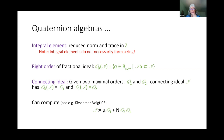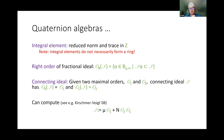The Bible for quaternion algebras is a book by Marie-France Vignéras from the eighties, written in French and very well written and complete. More recently, people have written English references — John Voigt has a book with a lot of that material and many algorithms. There are also lectures by Pete Clark in English with a really nice description of the quaternion algebra background.